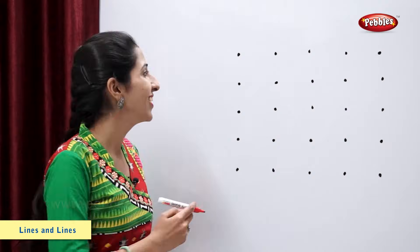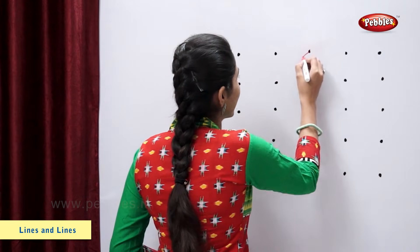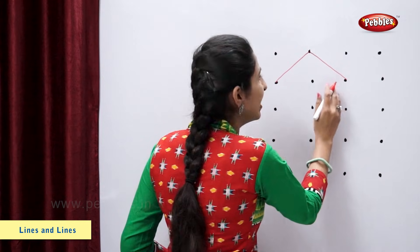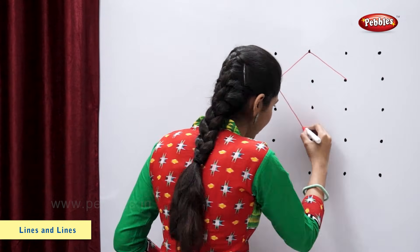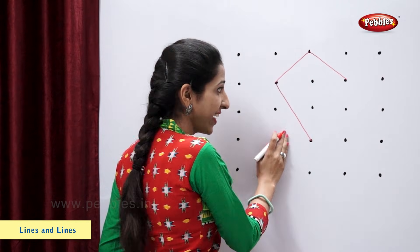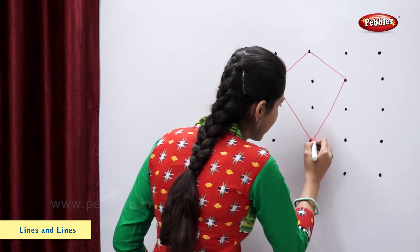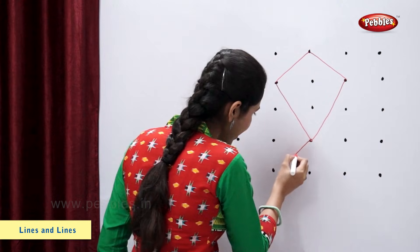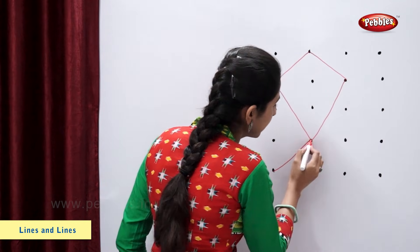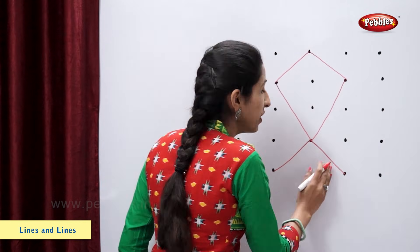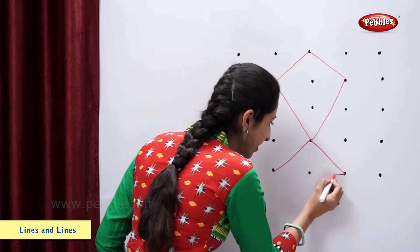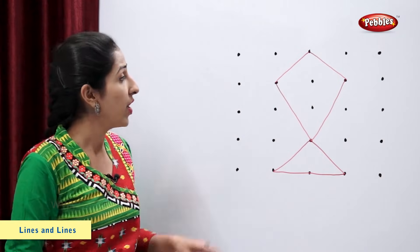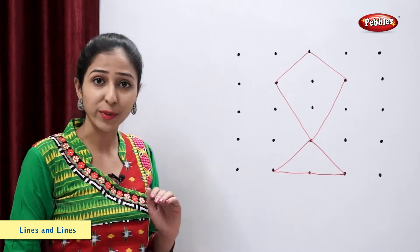Let's draw a kite. Slanting line, slanting line, slanting line, slanting line, slanting line, one more slanting line and a sleeping line. So, we have drawn this kite using the grid.